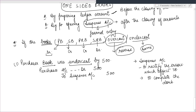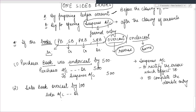Second example: sales book overcast by 100. The sales account will be debited and suspense account will be credited. Why debit the sales account? Because it is overcast — normally, the sales account is credited, but now we reverse it and debit it.